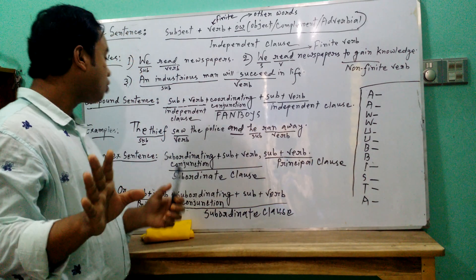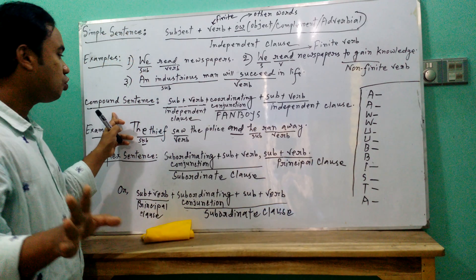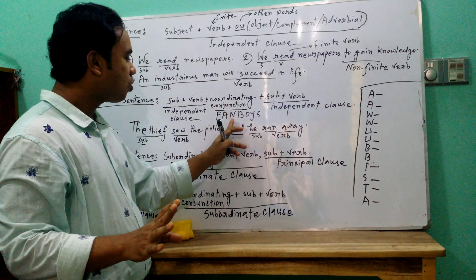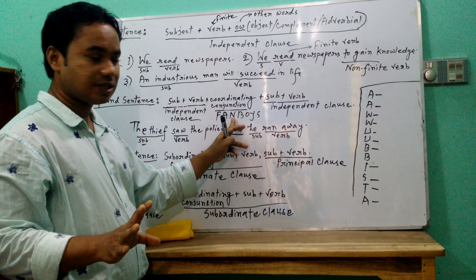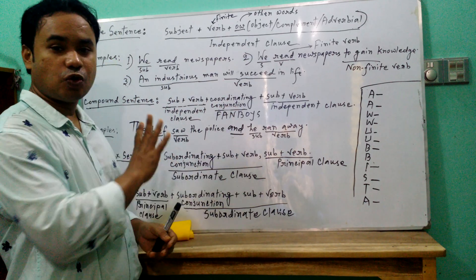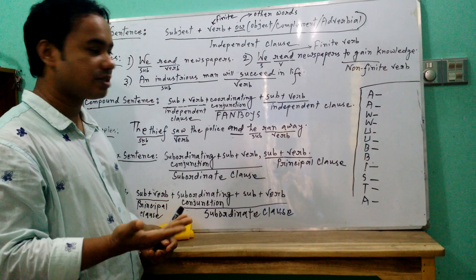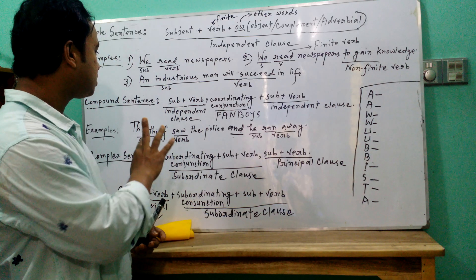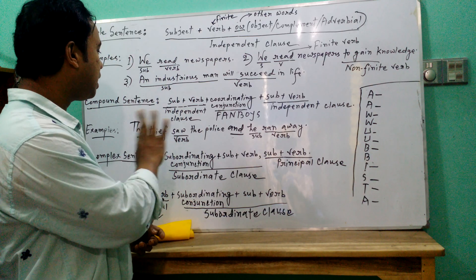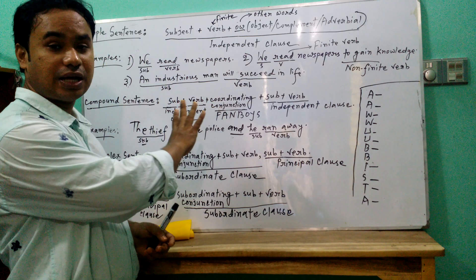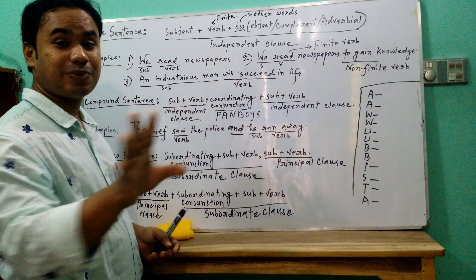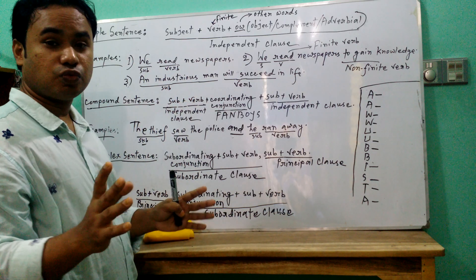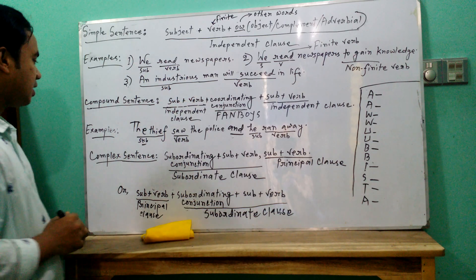To make a compound sentence, you must use one of these coordinating conjunctions, and the coordinating conjunction will connect the two independent clauses to one another.